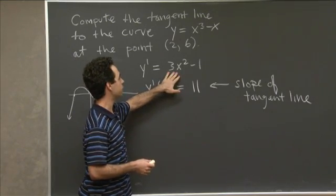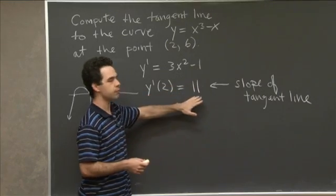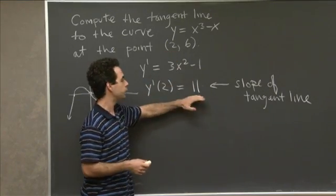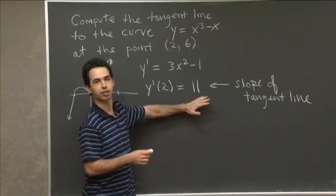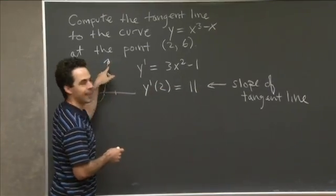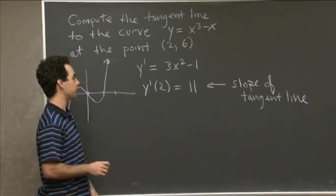Here, the derivative is 3x² - 1, so the slope at the point (2, 6) is 11. It's just a number. The slope at that point is that particular number.